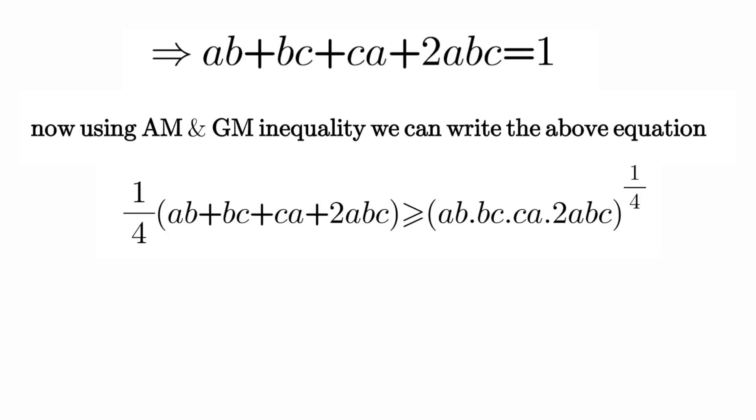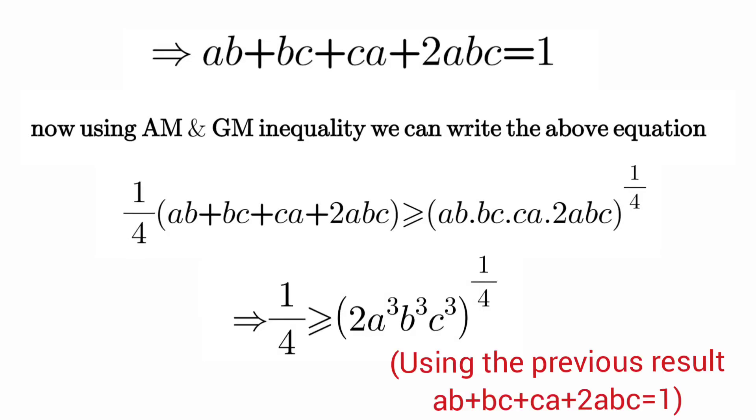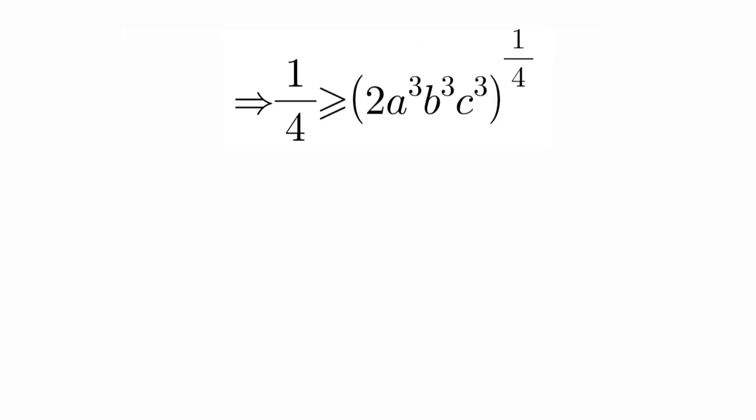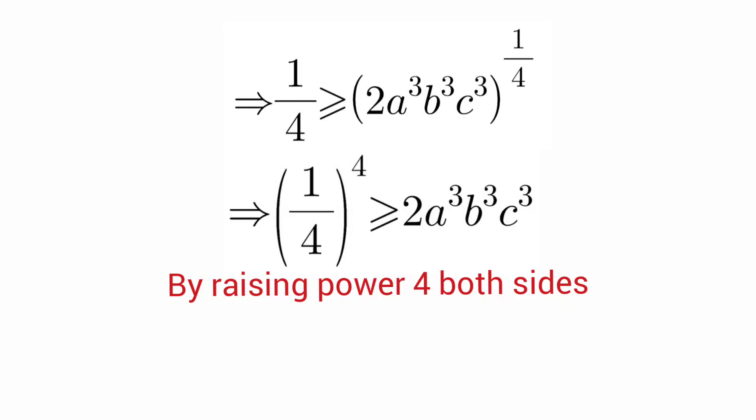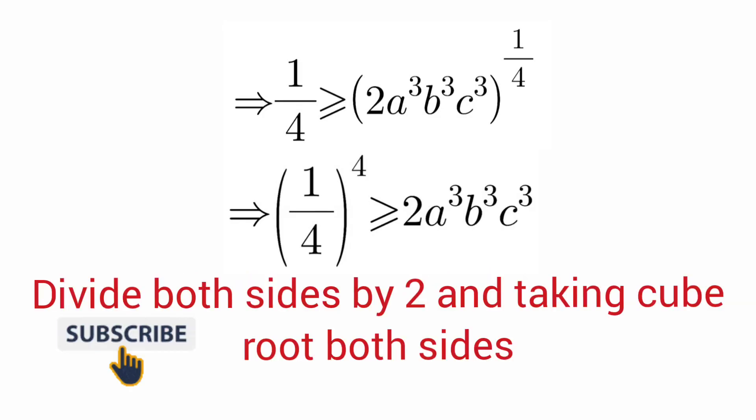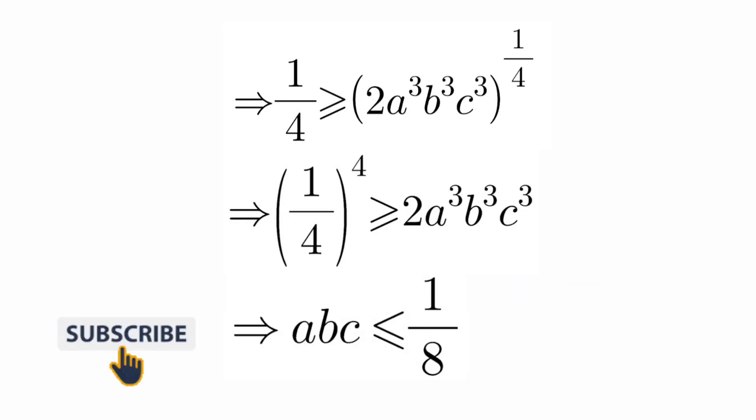After this, just let's clear some terms. And finally, we will get this and then from this, just simplify using exponents rule and finally clearing everything, we will get our desired result which is abc which is less than or equal to 1/8.